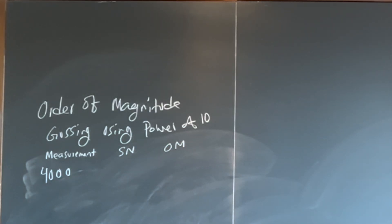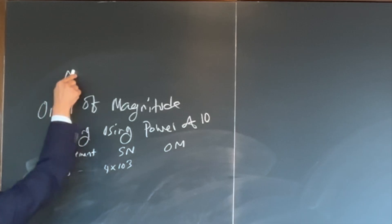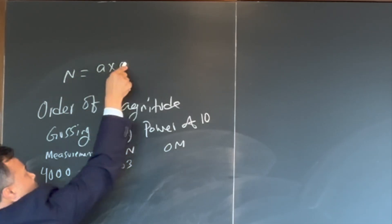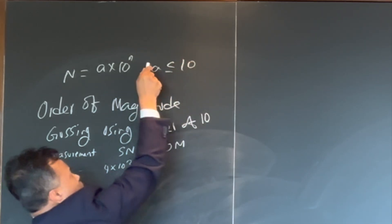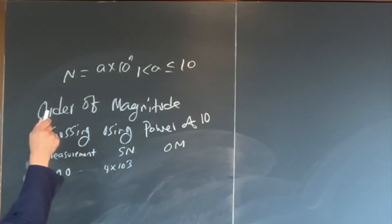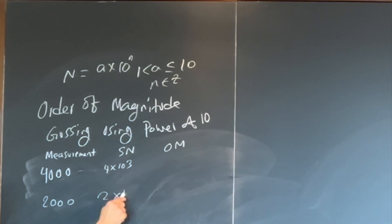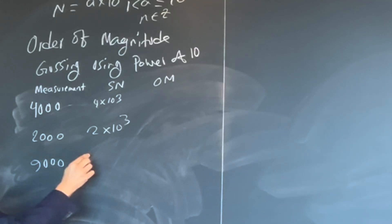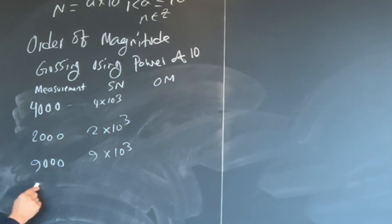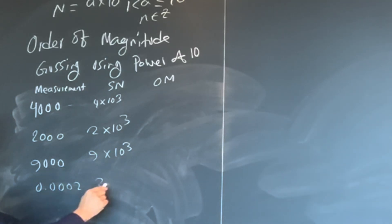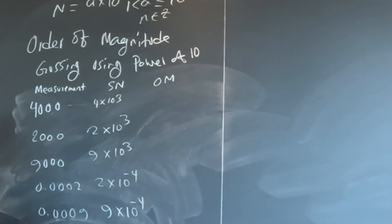So 4000 in scientific notation is 4 times 10 raised to 3. Scientific notation is N equals A times 10 raised to N, where A is between 1 and 10, and N is a whole number. So 2000 is 2 times 10 raised to 3, 9000 is 9 times 10 raised to 3, 0.0002 is 2 times 10 raised to negative 4, and 0.0009 is 9 times 10 raised to negative 4.